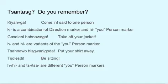Gashalaini. Hanawoga — Take off your jacket. The ha of hanawoga and he are variants of the U person marker. Jahnawoga. Hishkwanigoda — Put your shirt away. Gashalaini. Hishkwanigoda — Put your jacket away. The zah of zahnawo indicates your shirt, and the he of hishkwanigoda indicates you put it away.